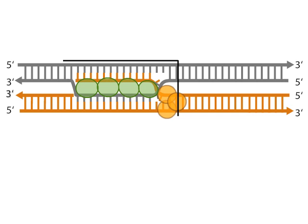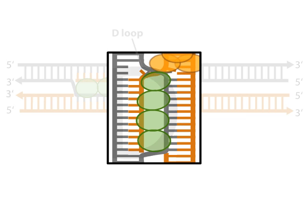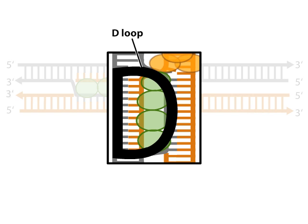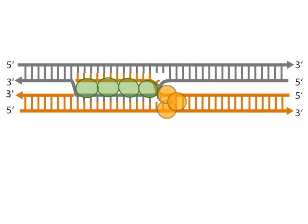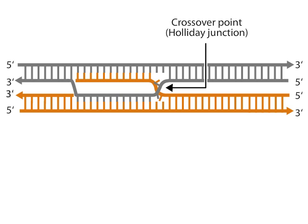Notice that the strand invasion reaction results in a D-loop formation shaped like the letter D. The donor single-stranded DNA has invaded the homologous region in the double-stranded DNA recipient molecule and displaces its like strand. At this point, a single-strand crossover called a Holiday junction has been made.